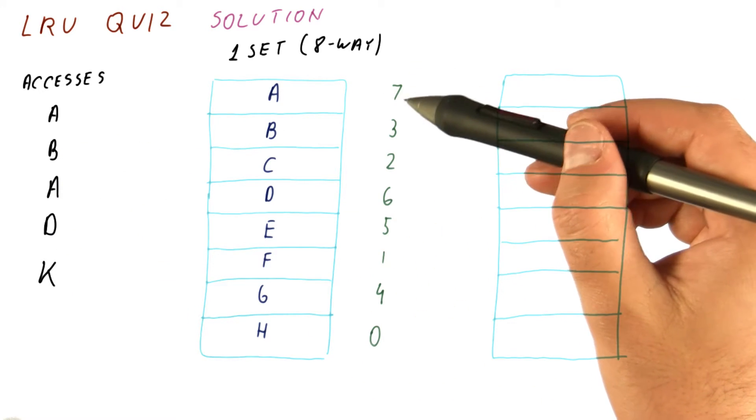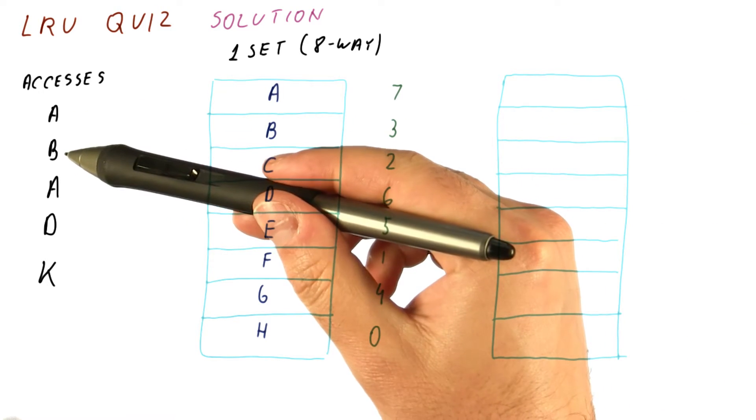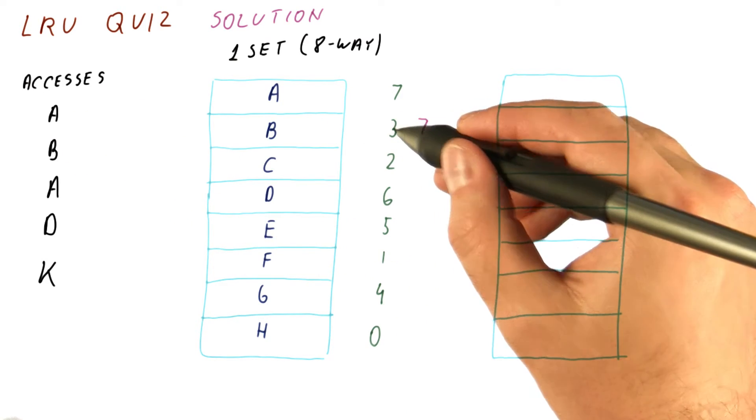A is the most recently used block. We reaccess it, none of the counters change. We access B, B's counter becomes 7 from 3.